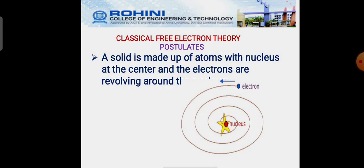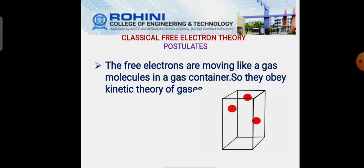Next one is the postulates of classical free electron theory. Generally, a solid is made up of atoms with nucleus at the center and the electrons are revolving around the nucleus. Second postulate is the free electrons are moving like gas molecules in a gas container, so they obey kinetic theory of gases.